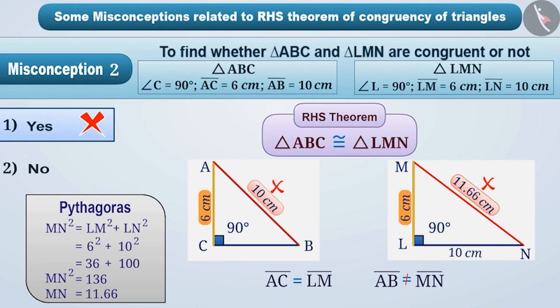So, using the RHS Theorem here, we can say that these two triangles are not congruent. Therefore, option 2 is the correct answer.